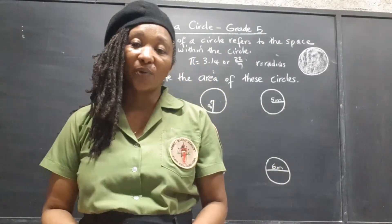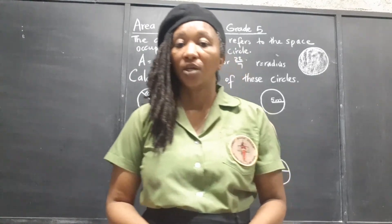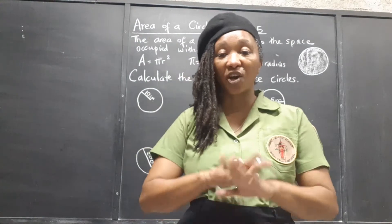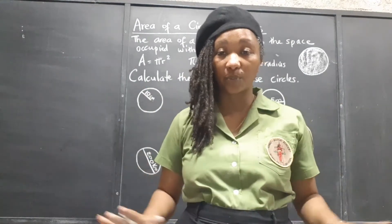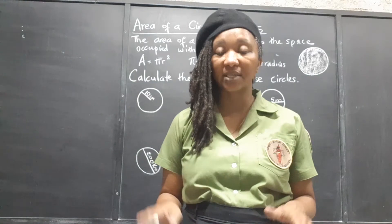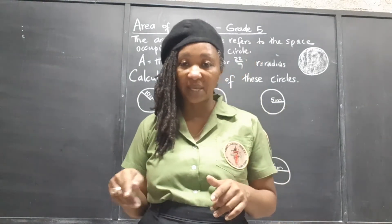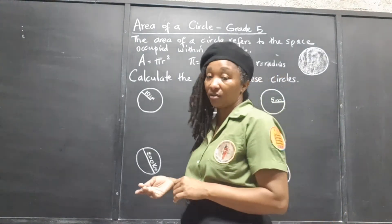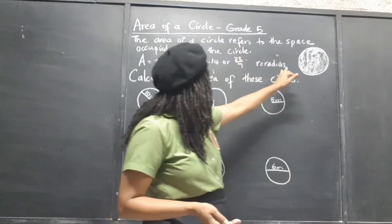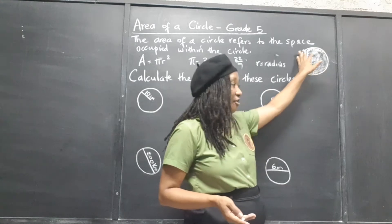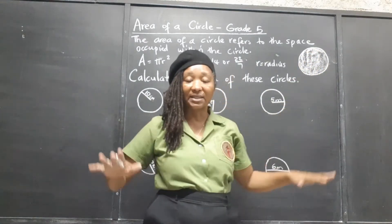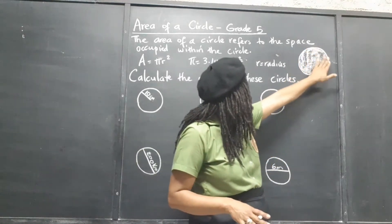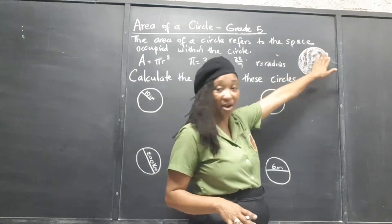What do we mean when we talk about the area of a circle? The concept of area is the space occupied on the inside of a flat figure — a closed flat or plane (P-L-A-N-E) figure. So it's the same for the area of a circle. Here we have the circle and I've shaded the area — the entire space on the inside of the circle. That's what we mean by the area of the circle.